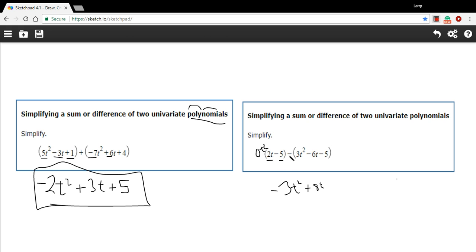And then we have a negative 5 minus a negative 5. So that's negative 5 plus 5, or just 0. So our answer is this. So that's just keeping in mind that you're subtracting for each term.